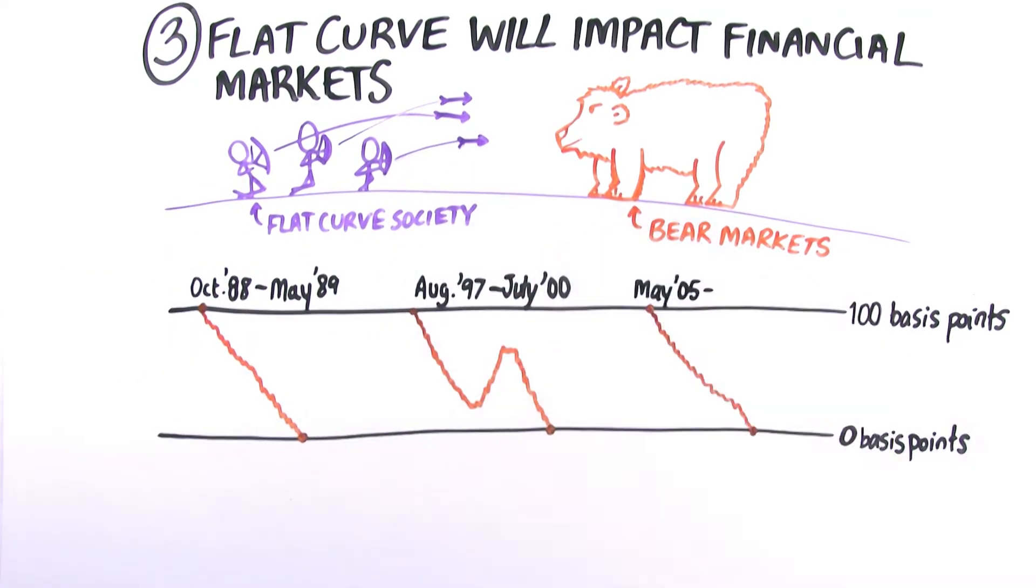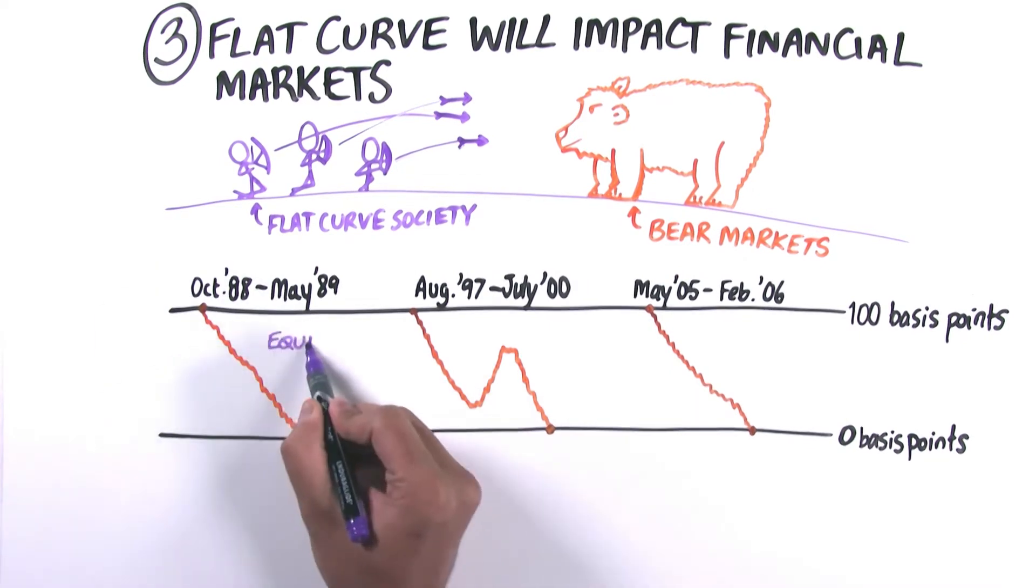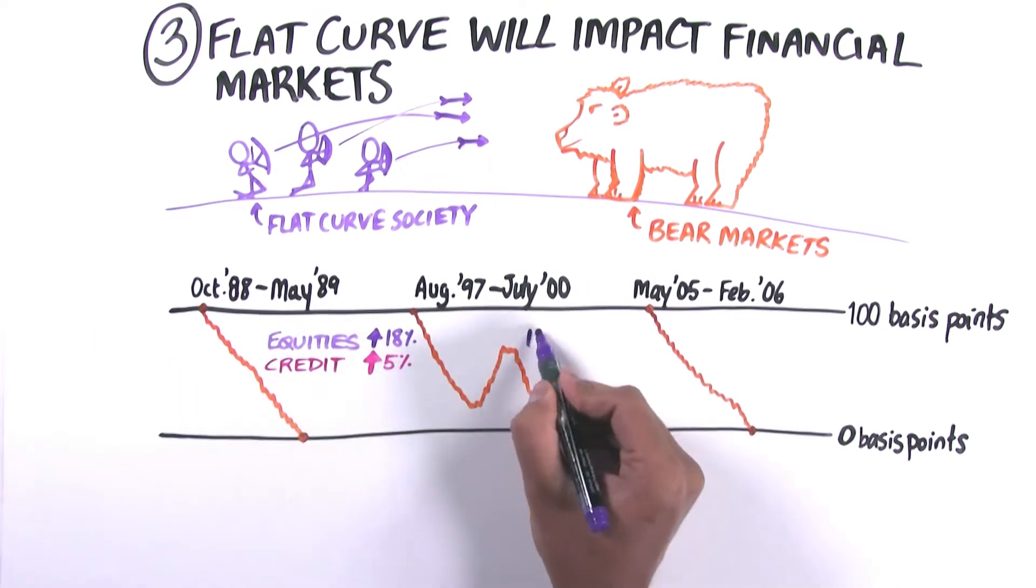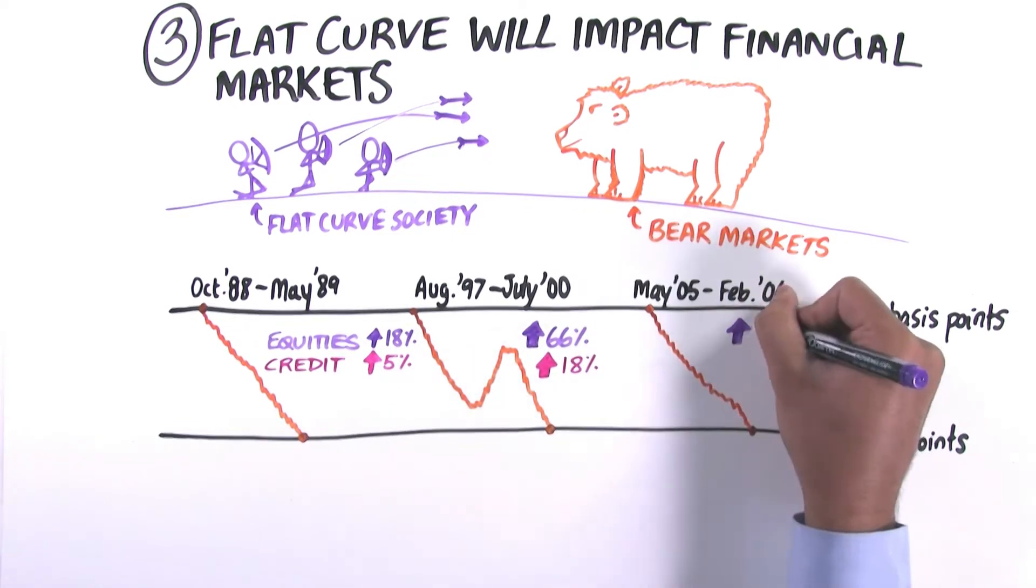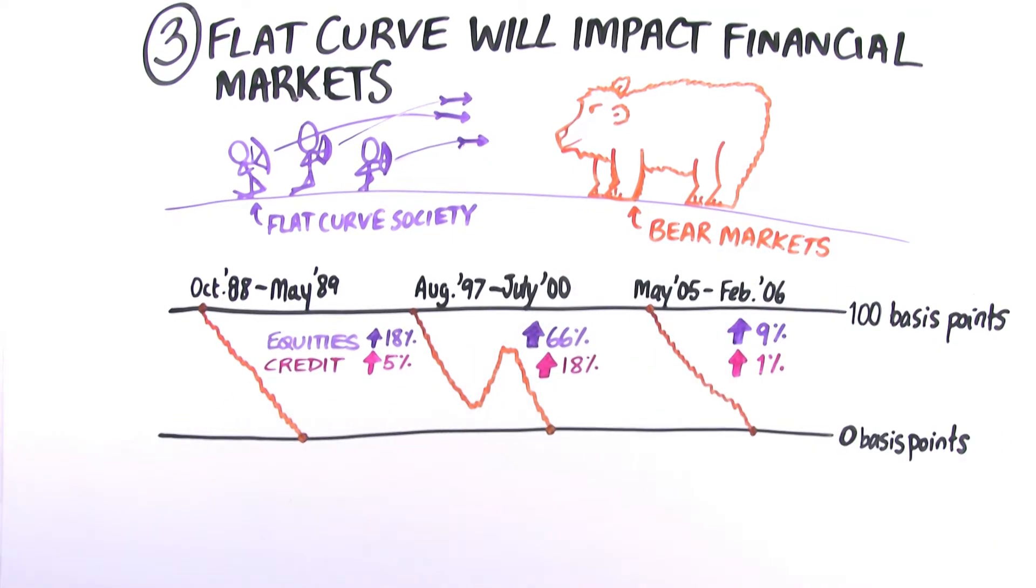In the last three cycles, after the yield curve flattened through 100 basis points, we are currently at about 90 basis points. Both equity markets and credit sectors posted positive total returns up until yield curve inversion. So markets still fared well, even though the curve was flattening.